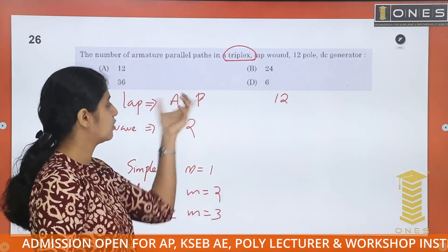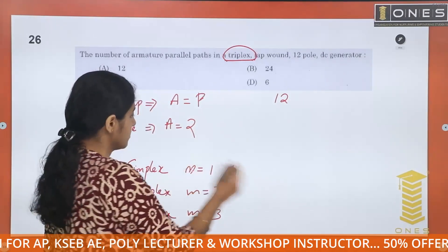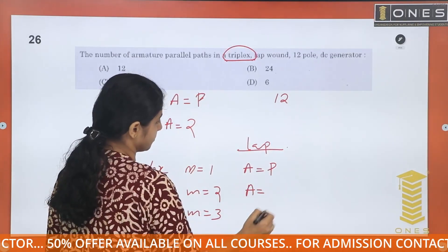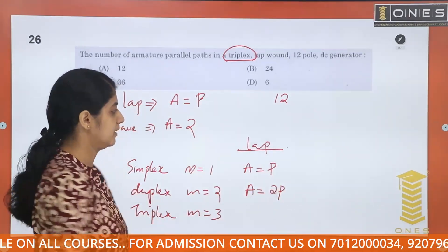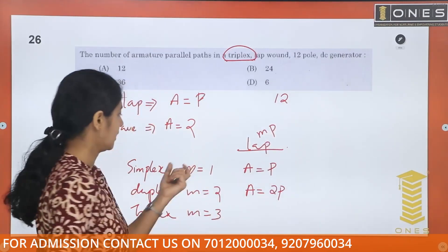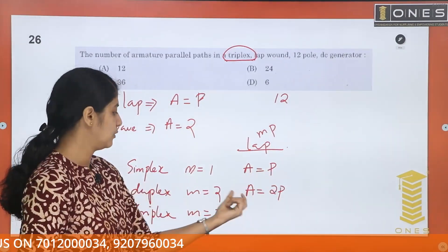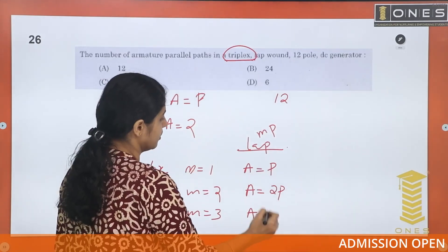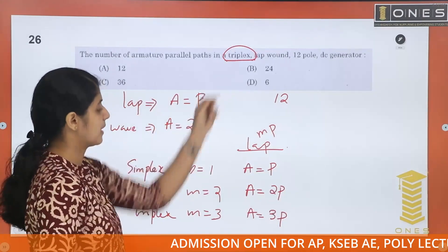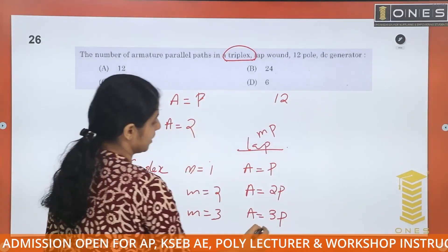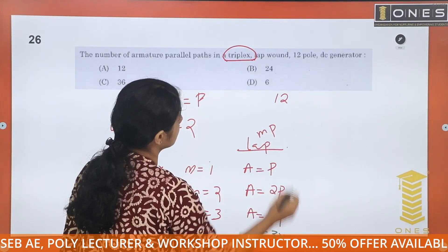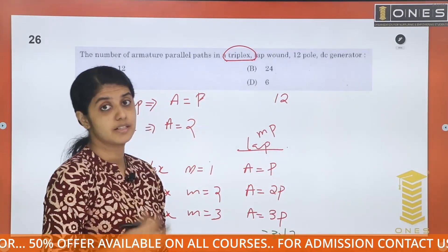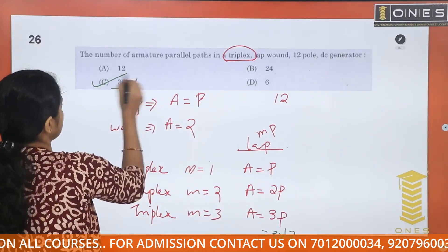For lap winding, the general formula is a equals m into p. Simplex: a equals 1 × p equals p. Duplex: a equals 2p. Triplex: a equals 3p. For our problem, triplex with 12 poles gives a equals 3 × 12 equals 36. So the answer is 36.